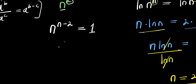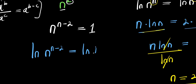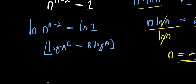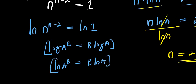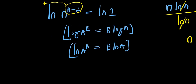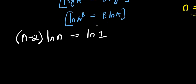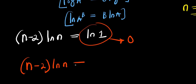At this point I make use of natural log: natural log of n power (n minus 2) equals natural log of 1. Remember, natural log of a power b equals b times natural log of a, so (n minus 2) times natural log of n equals natural log of 1. And natural log of 1 is 0, so (n minus 2) times natural log of n equals 0.